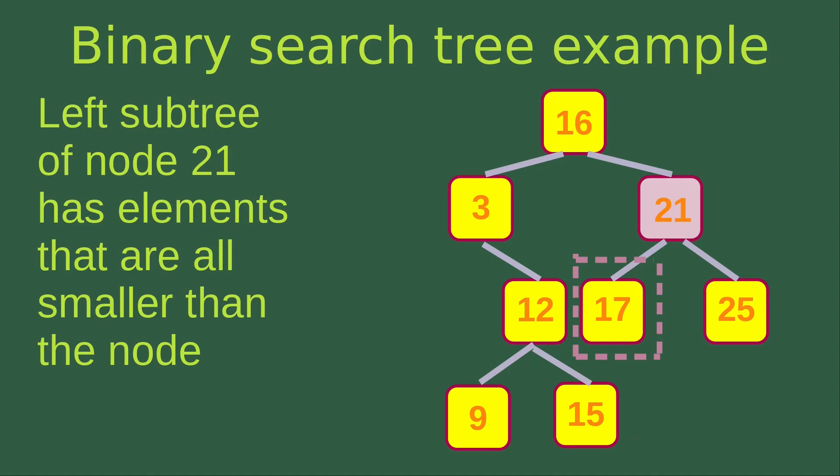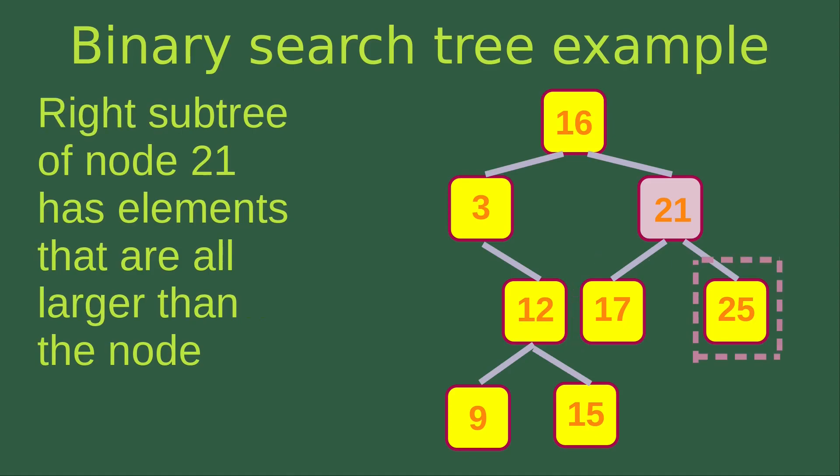Then we take a look at the left subtree of node 21. There is only one element in that subtree, which is 17, and 17 is smaller than 21. The right subtree of 21 has only element 25, and 25 is of course larger than 21, which is the node.